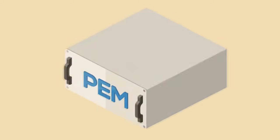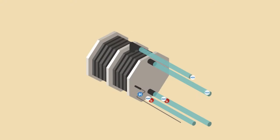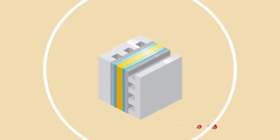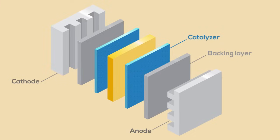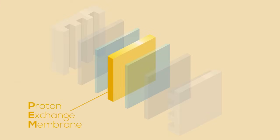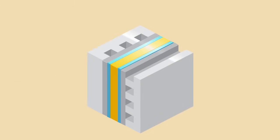The PEM electrolyzer overcomes some of these issues by using a solid polymer electrolyte, which is the membrane responsible for the conduction of protons, the separation of hydrogen and oxygen, and the electrical insulation of the electrodes.